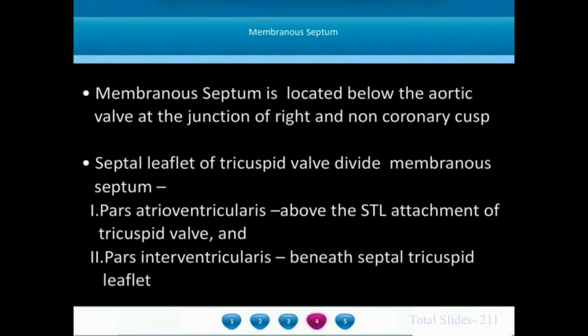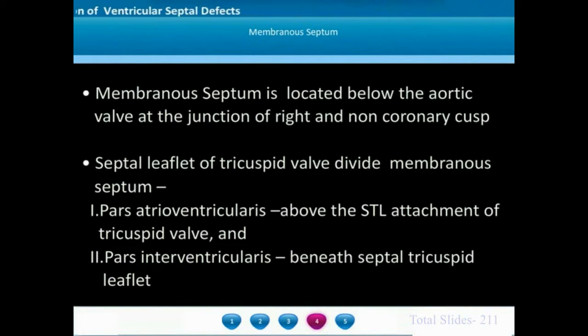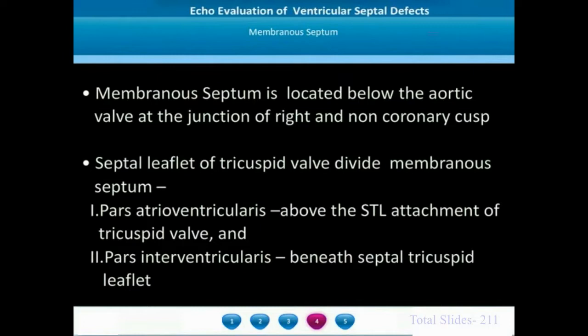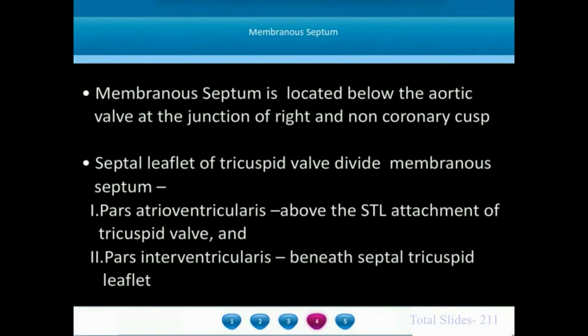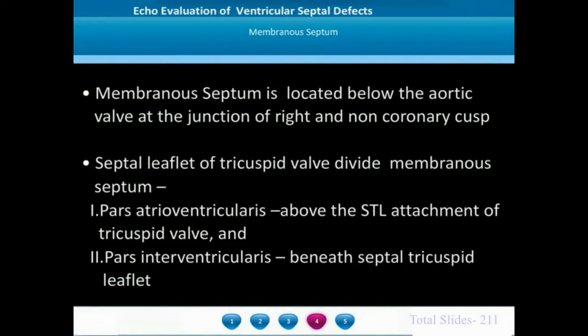Even though the anatomic extent of the membranous septum is very small, it is very important because most ventricular septal defects occur in the membranous septum. The membranous septum is bounded superiorly by the aortic valve near the non-coronary cusp and inferiorly by the trabecular septum. The septal leaflet of the tricuspid valve divides the membranous septum into two parts: superiorly the atrioventricular part above the septal tricuspid leaflet, and inferiorly the interventricular part beneath it.